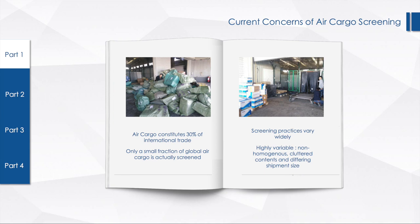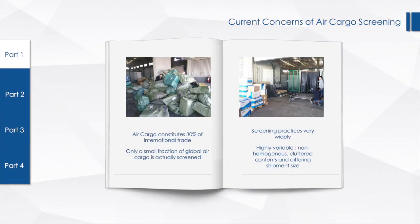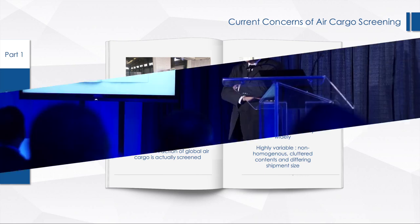Only a small, limited fraction of global air cargo is actually screened. Many airports today practice what they call known shipper programs — if they know you well, they tend to let your air cargo through without much screening. Screening practices also vary very differently from country to country. We have countries that use the latest and greatest, and we also have countries that use dogs or very cursory human eyes. Air cargo, unlike sea containers which are very homogeneous, tends to be highly variable and non-homogeneous — very cluttered because everybody shares the same space in the pallet or ULD.